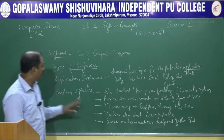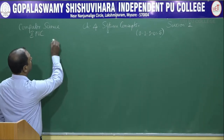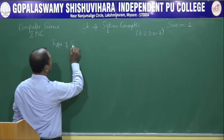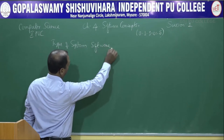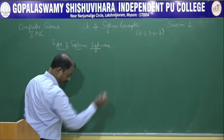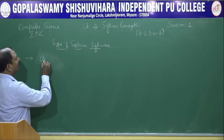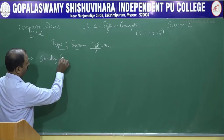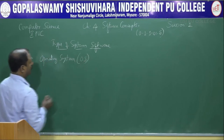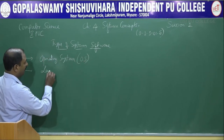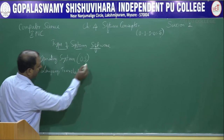Now let us look at the types of system software. There are three types of system software: they are operating system (OS), language translator, and utility software.